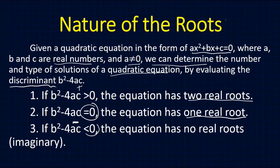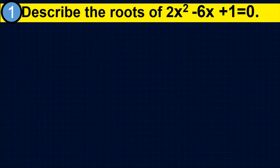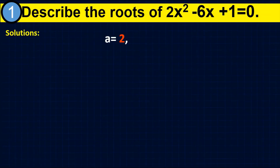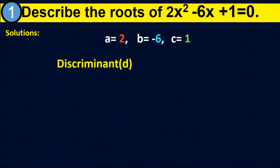Let us have our first example. Number one: describe the roots of 2x squared minus 6x plus 1 equals 0. Before describing the roots, make sure the equation is in general form. Since it is already in general form, let us identify the values of a, b, and c. Here, a is equal to 2, b is equal to negative 6, and c is equal to 1. To describe the roots, use the discriminant: b squared minus 4ac.